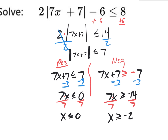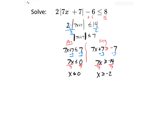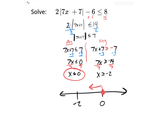We need to determine whether to write the answers together or apart, so we go to a number line. Smaller number negative 2 on the left, bigger number 0 on the right. x ≤ 0 goes left with a solid dot at 0, x ≥ negative 2 goes right with a solid dot at negative 2. The areas are together, so we write them as a compound inequality with x in the middle, with less than or equal to symbols.